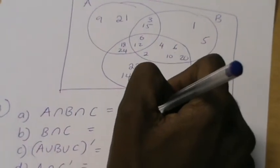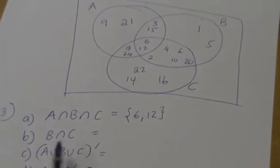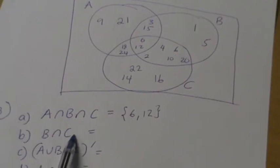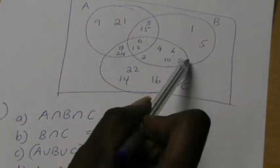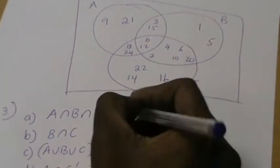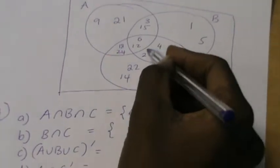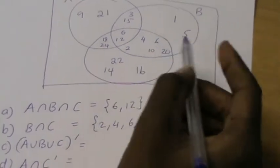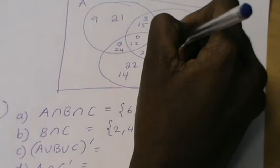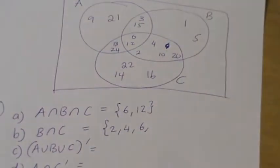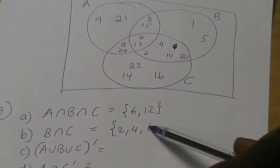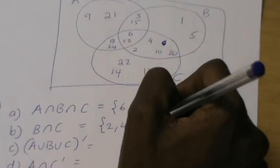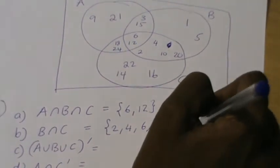So it's 6 and 12, and then I close my set. Then B intersect C, elements inside the circle B and also inside the circle C. So it's these elements in here. We should list them in ascending order. So I have 2, then 4, then 6. Oh sorry, I see I listed 6 twice, I shouldn't do that. So I have 2, 4, 6, then I have 10, I have 12, and then I have 20.